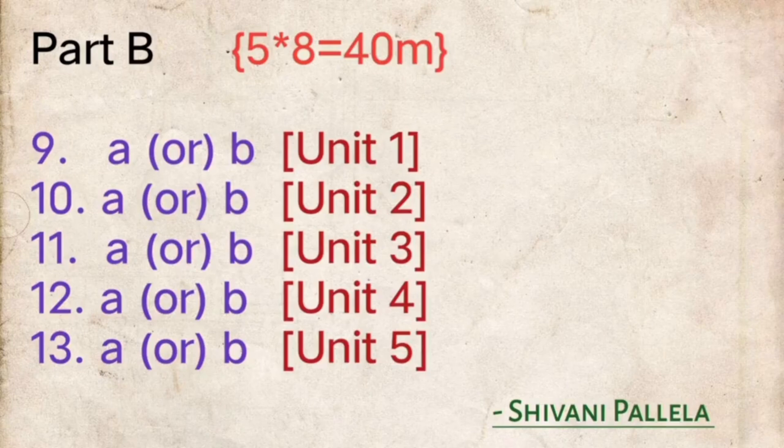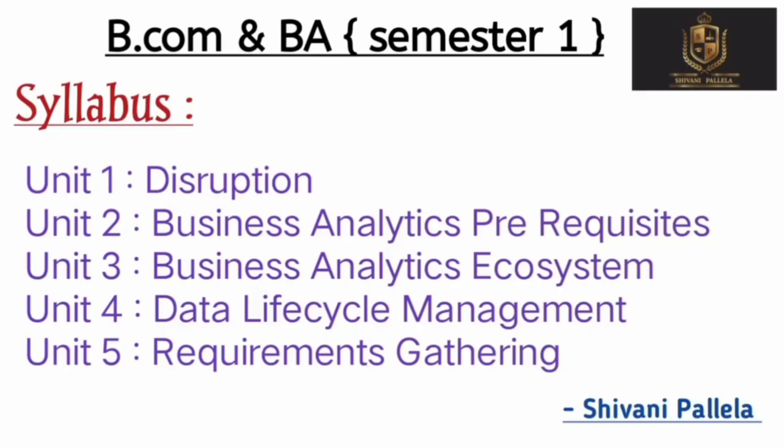In Part B, from question nine to question thirteen, each question carries eight marks. For eight marks, you need to write a minimum of two sides — front and back, like one full page. These answers are compulsory.